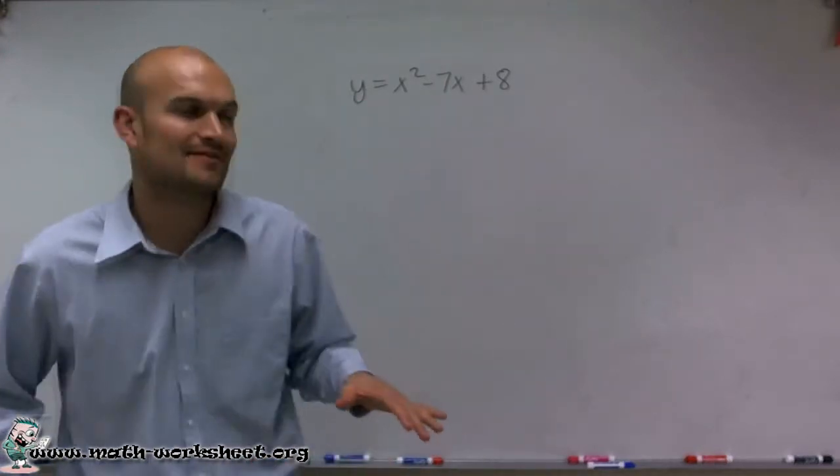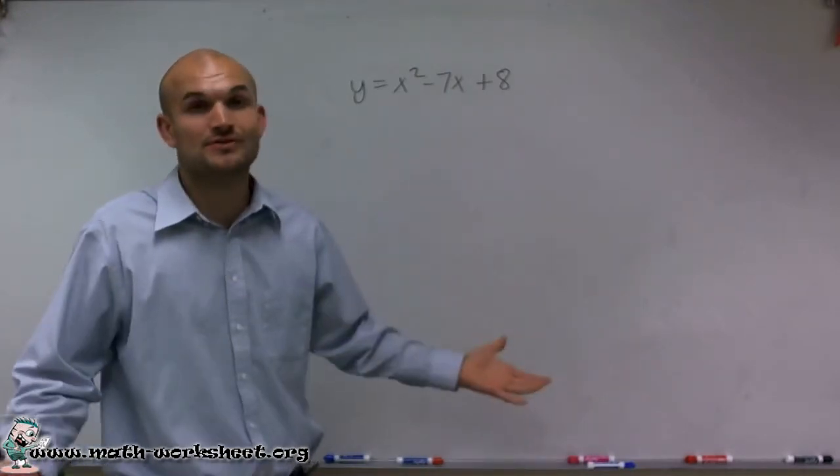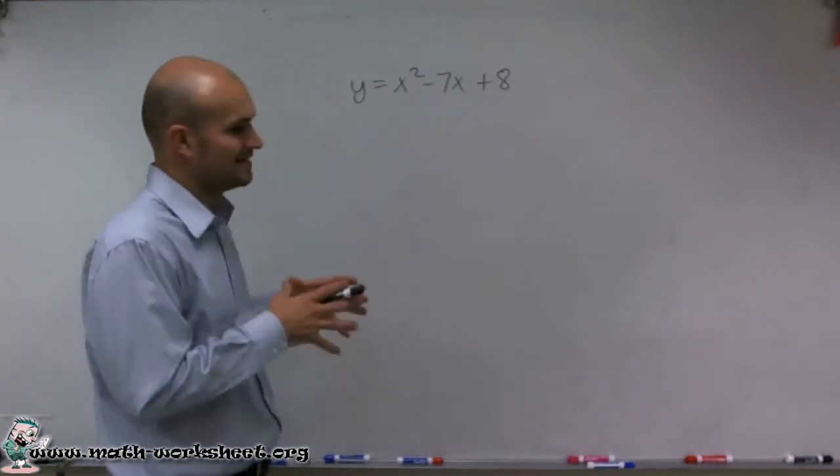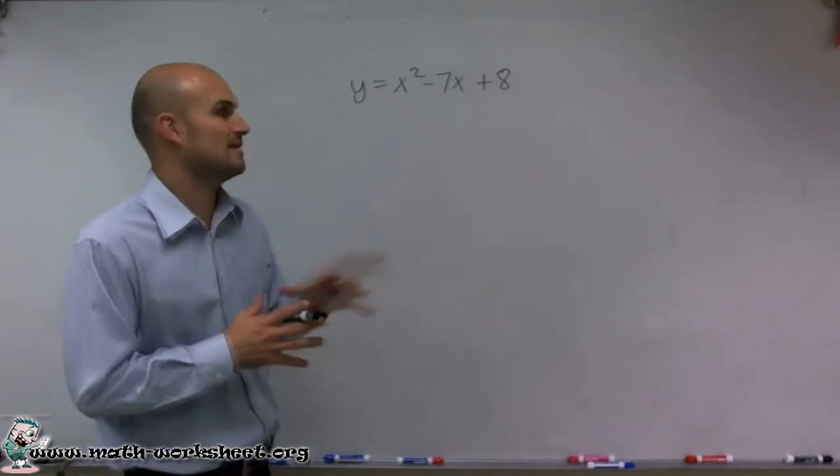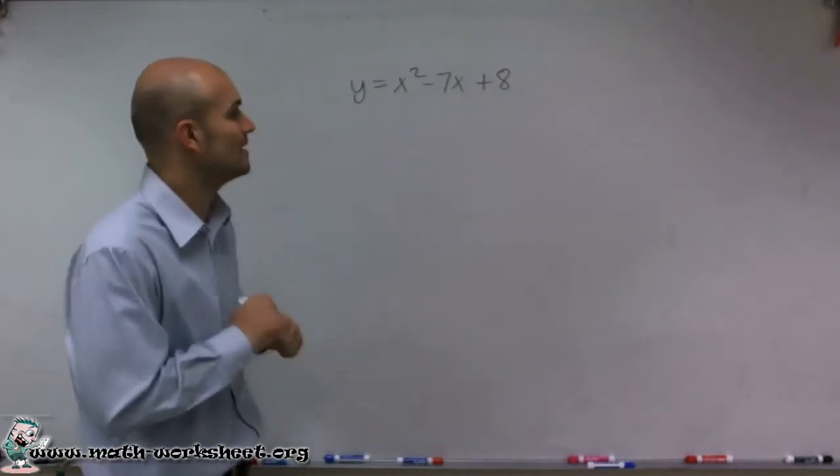If you notice, this equation is a little bit different than our parent equation y equals x squared. It becomes more difficult now that we have these different numbers because they're going to alter our graph and transform it in certain ways.